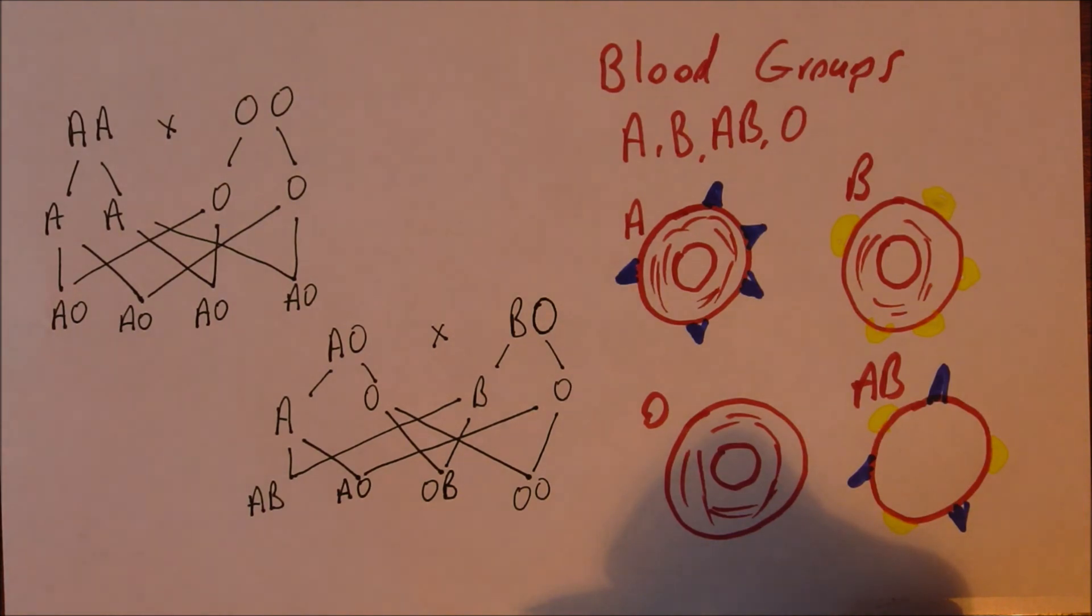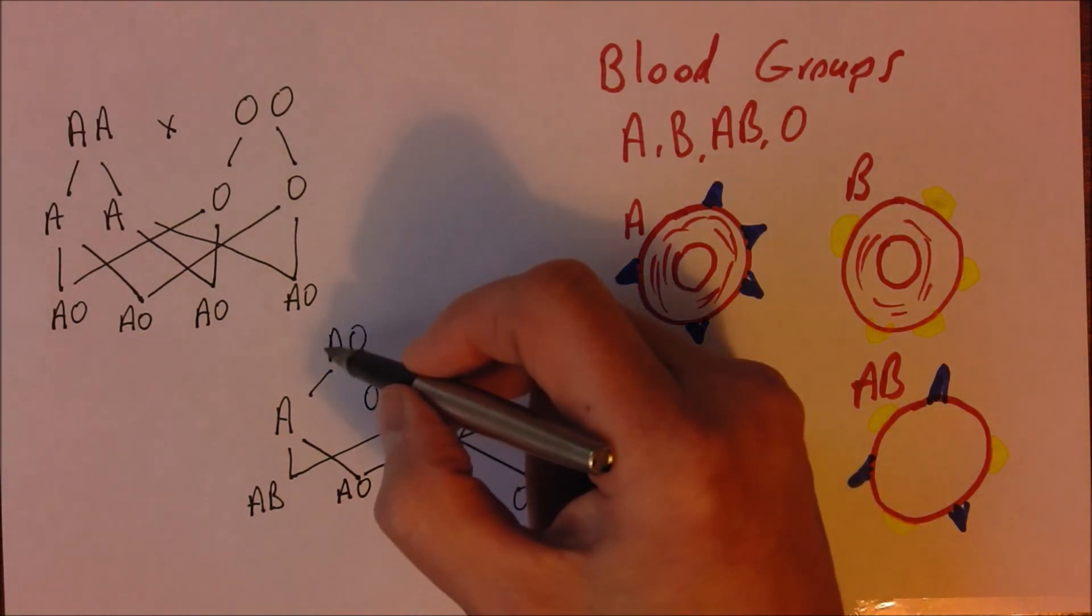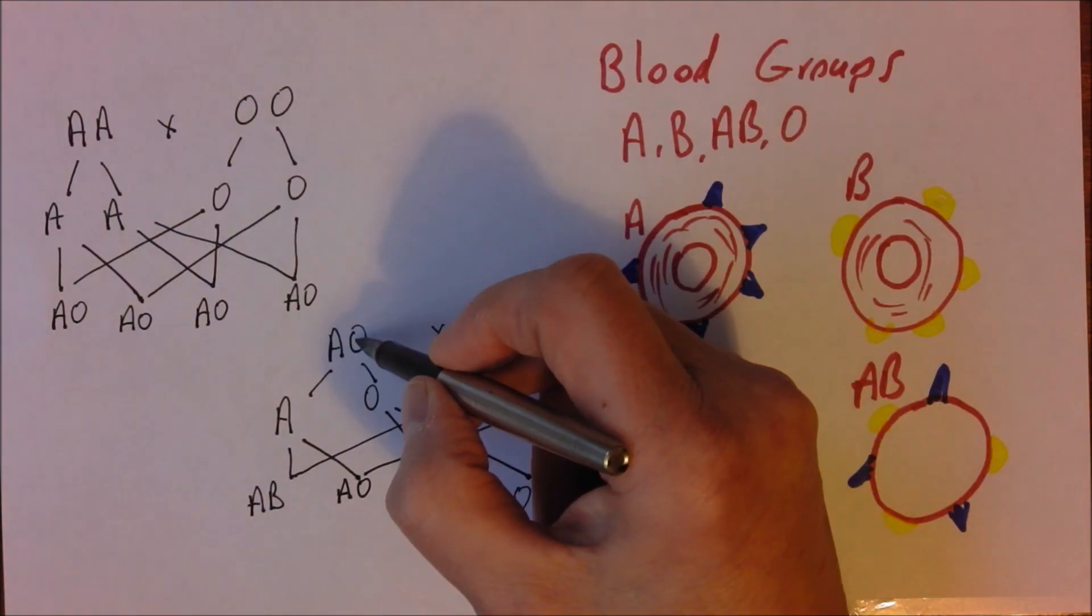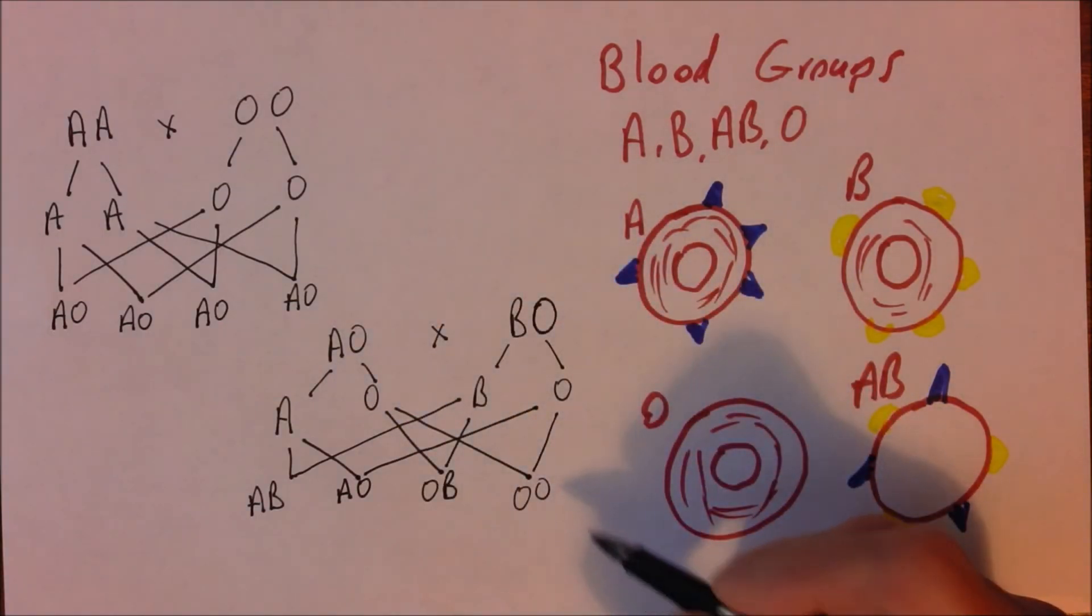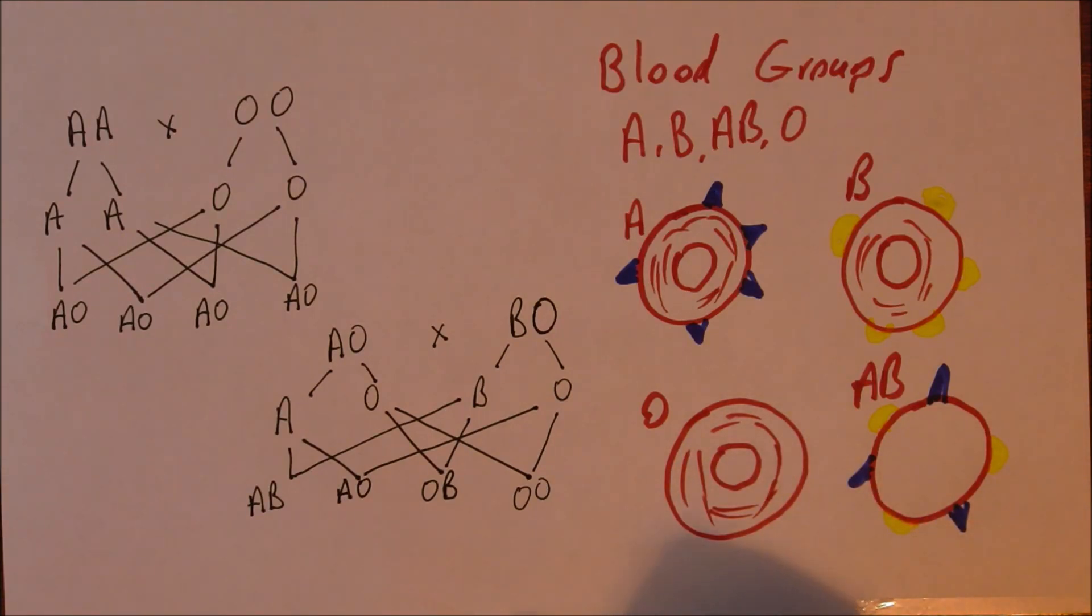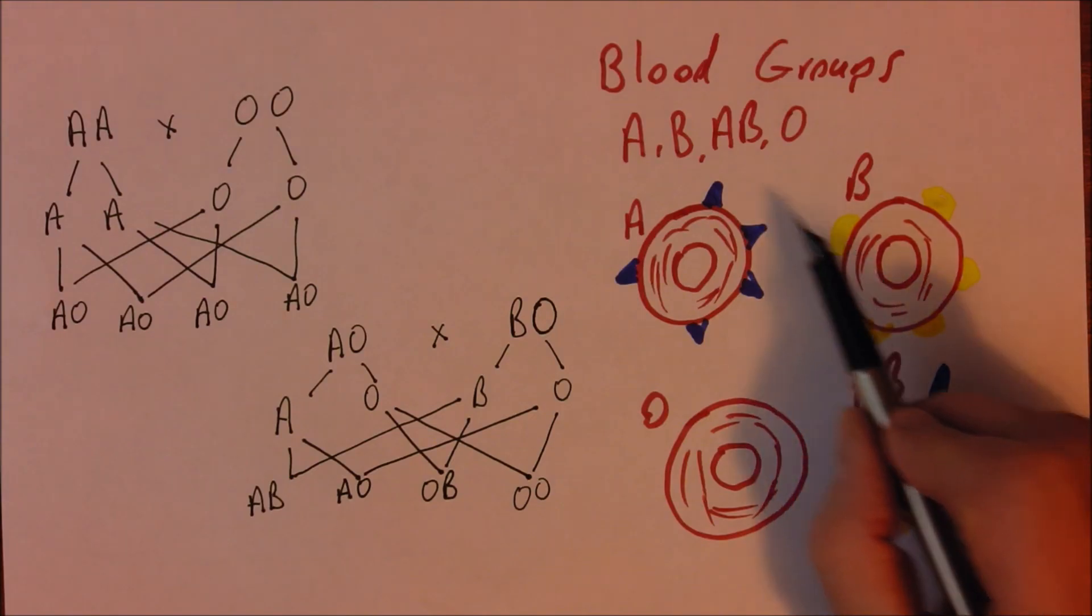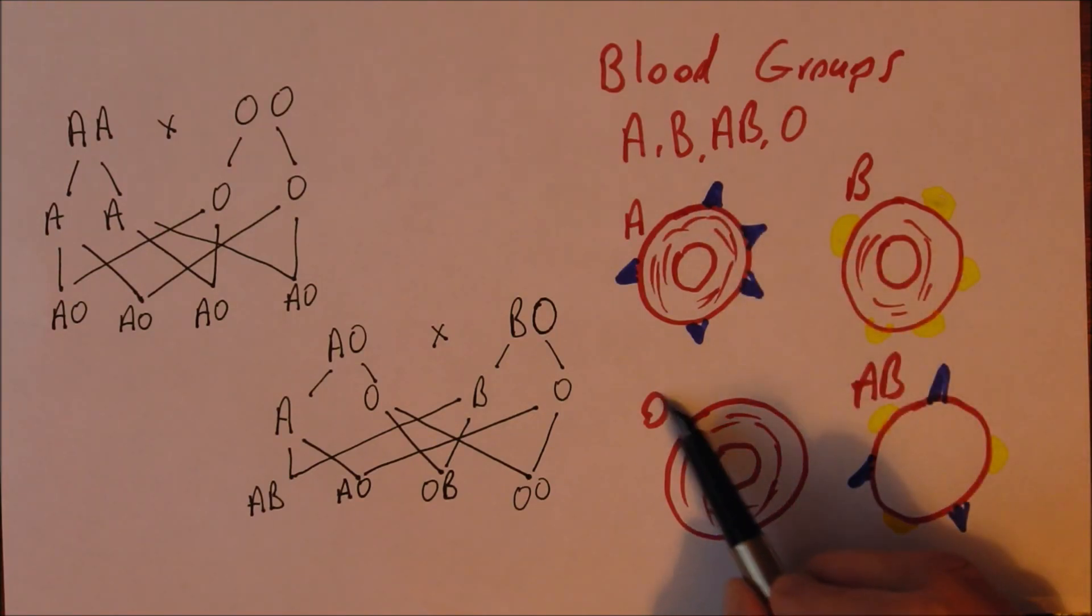So we can take any combination of A's, B's and O's in the parents and we can easily work out what potential phenotypes could come as a result of that. So remember the A and the B are co-dominant, it is the O that is recessive and it is an autosomal form of inheritance.